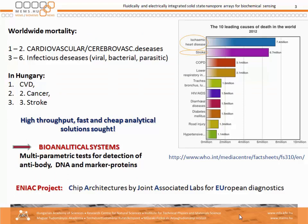What is the motivation? The worldwide mortality statistics is very well known. In the first two places worldwide, cardiovascular and cerebrovascular diseases are found, and after that infectious diseases. In Hungary, the first is cardiovascular disease, the second is cancer, and the third is stroke. The number of cases is so high that we would like to have a high-throughput, fast and cheap analytical solution.